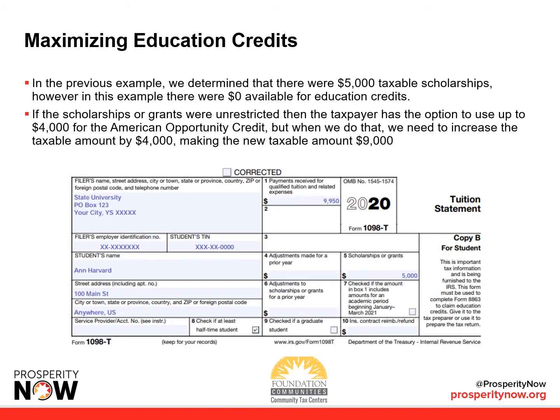In the previous example, we were able to determine there are $5,000 in taxable scholarships. However, in this example, there were $0 available for education credits. If the scholarships or grants were unrestricted, then the taxpayer has the option to use up to $4,000 for the American Opportunity Credit, but when we do that, we need to increase the taxable amount by the equivalent $4,000, making the new taxable amount $9,000.